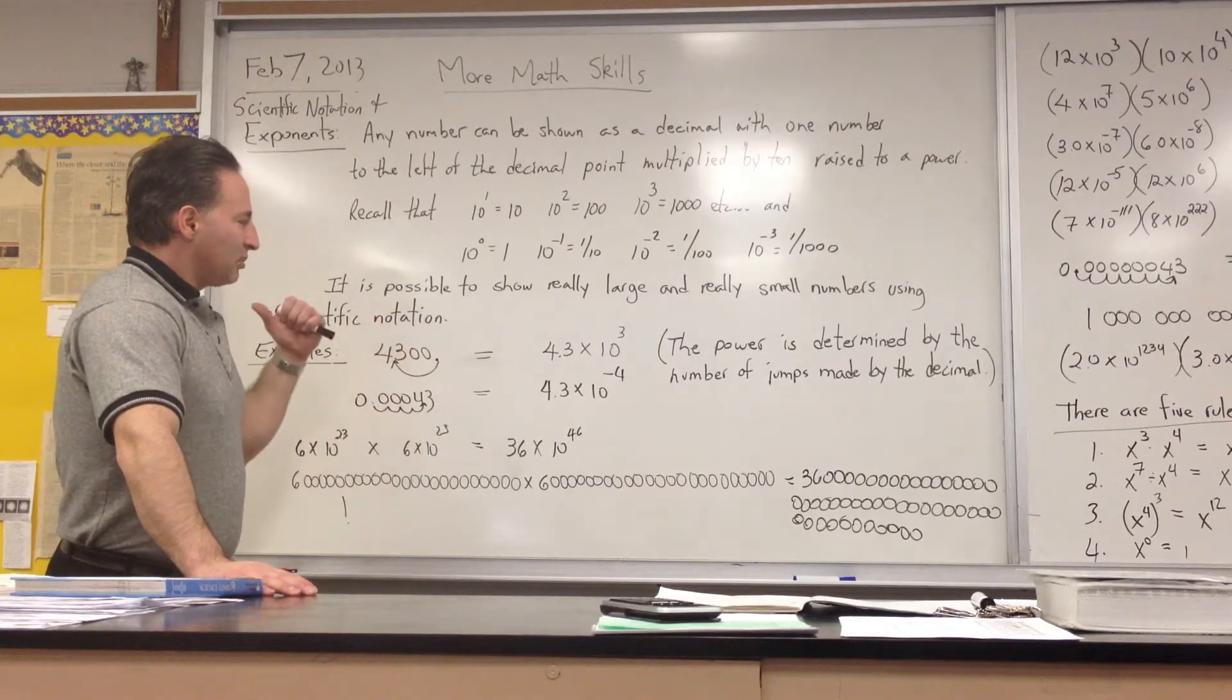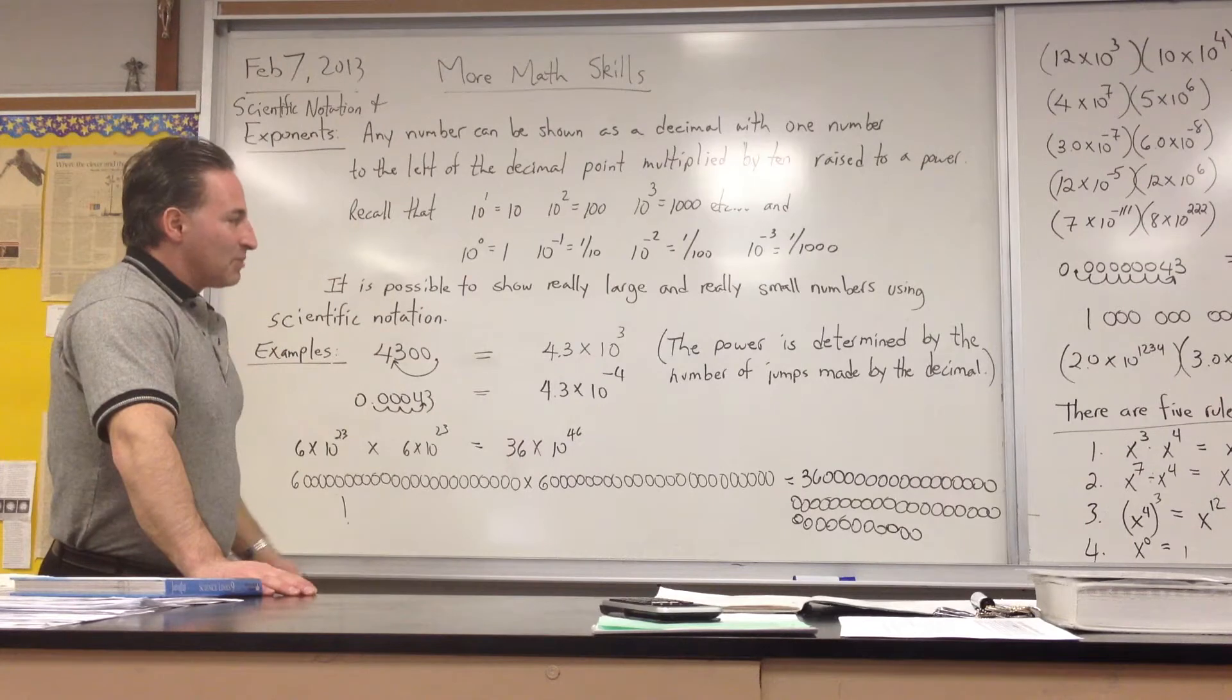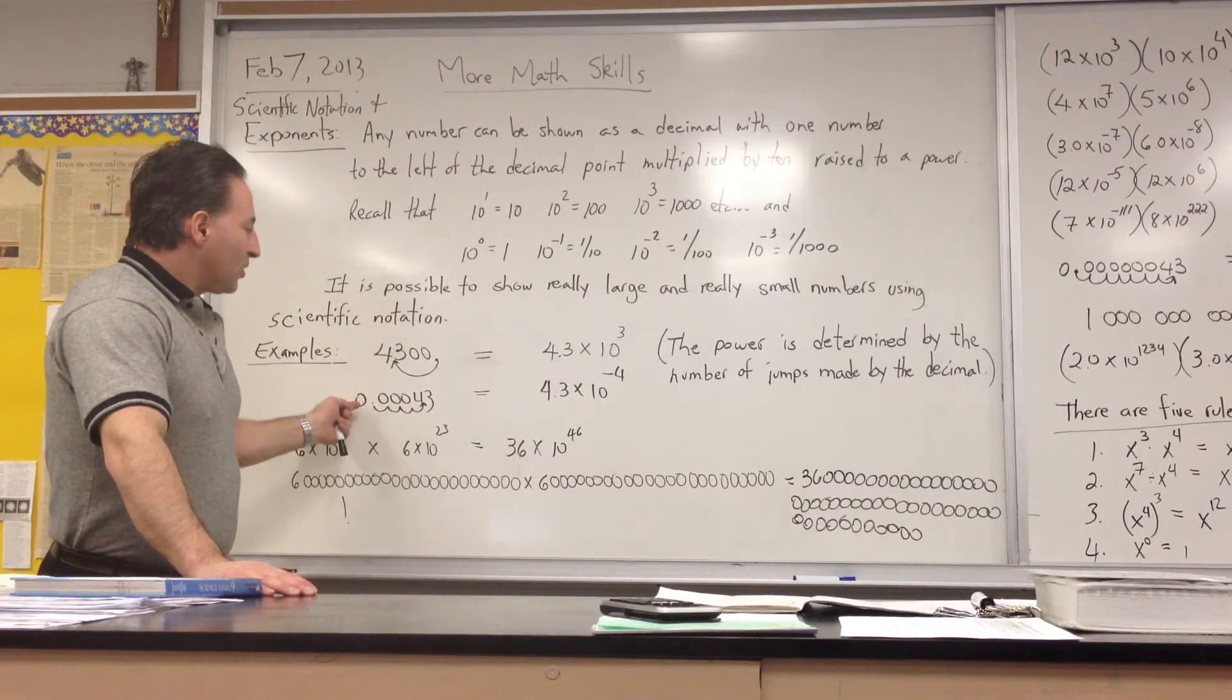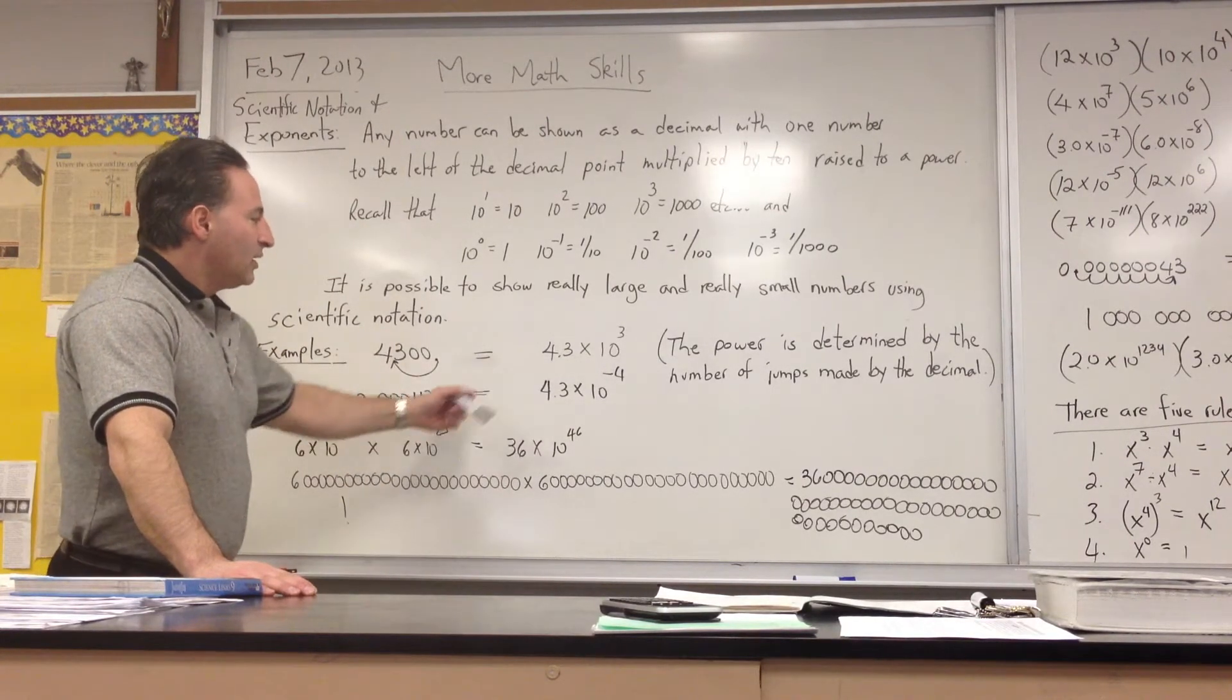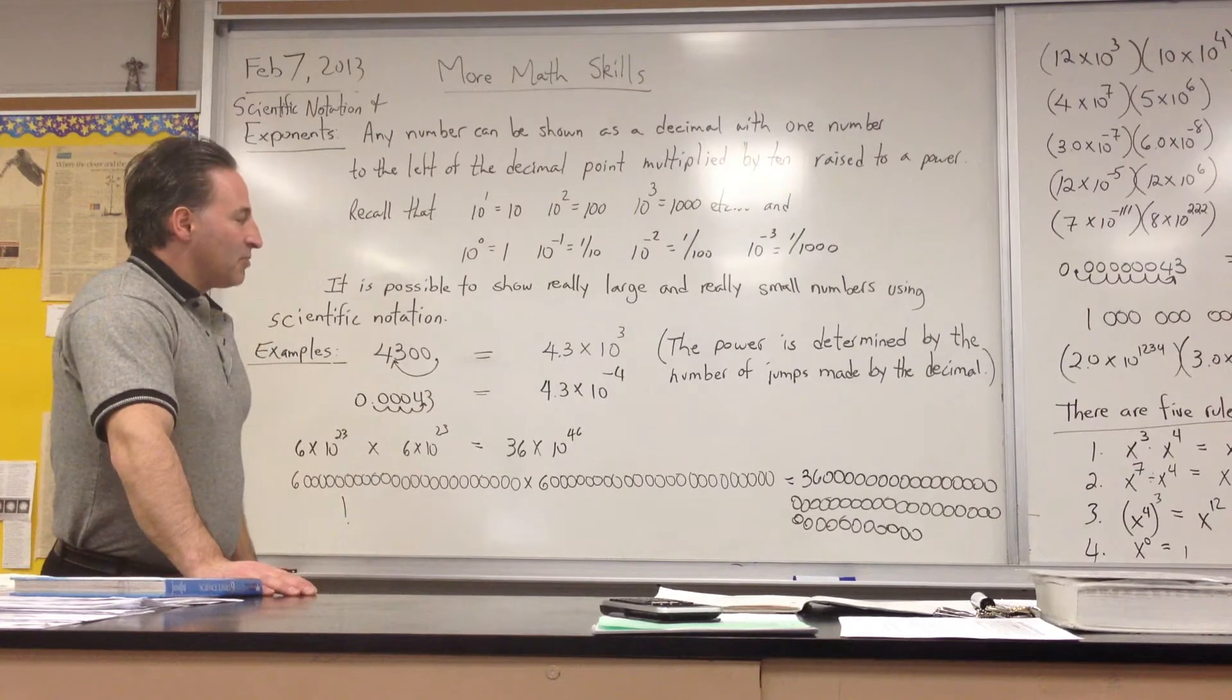If you move the decimal place to the left, the exponent goes up, becomes more positive. If you move the decimal to the right, the exponent becomes more negative.